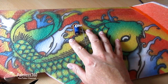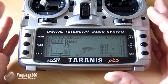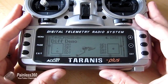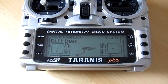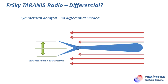So let's go back to the radio and explain what differential actually is. Differential is something that we need because the wing doesn't provide the same amount of control input in each direction. Here is a symmetrical aerofoil — the kind of wing that you'd find on 3D acrobatic planes. As you move the aileron up and down into the stream of air coming above and below the wing, you get the same kind of control input. Whether it goes up or down, either direction gives you the same amount of control.